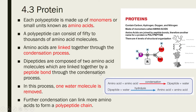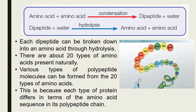Back to condensation: with further condensation, more amino acids are linked to form a polypeptide chain. Various types of polypeptide molecules can be formed from 20 types of amino acids.